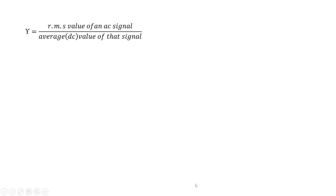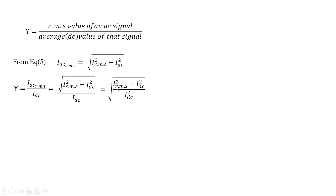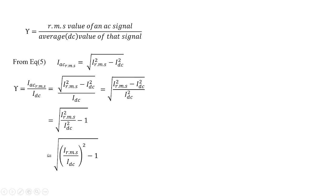Using the ripple factor formula and from equation 5, I_AC_RMS = √(I_RMS² − I_DC²). Applying the gamma formula γ = I_AC_RMS / I_DC, this becomes √(I_RMS² − I_DC²) / I_DC, which simplifies to the final formula: γ = √((I_RMS / I_DC)² − 1).